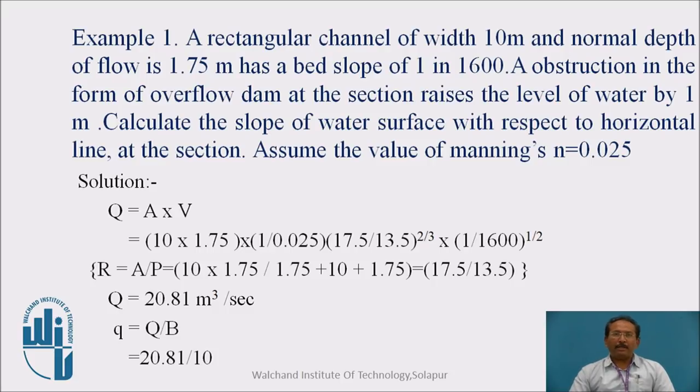Basically we must know what is the field depth, what is the critical depth and what is the normal depth. Depending on these three depths, we are finding out which type of slope it is. If Yn is greater than Yc, or Y0 greater than Yc, that means normal depth is greater than critical depth, it is a mild slope. When Yn or Y0 equals Yc, it is a critical slope. When Yc is greater than Y0 or Yn, this is the steep slope.